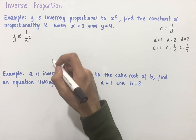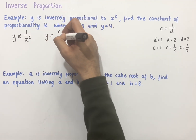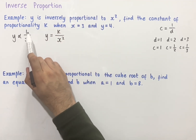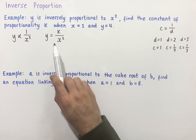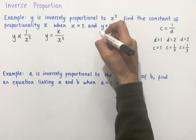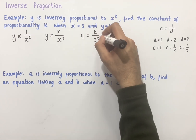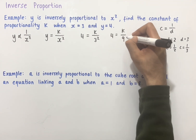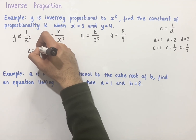Writing this as an equation, we have y equals k over x squared, where k is the constant of proportionality. Since we're given values for x and y, we can substitute these in. When y equals 4 and x equals 3, we get 4 equals k over 3 squared. Simplifying, we get 4 equals k over 9, and multiplying both sides gives k equals 4 times 9, which is 36.